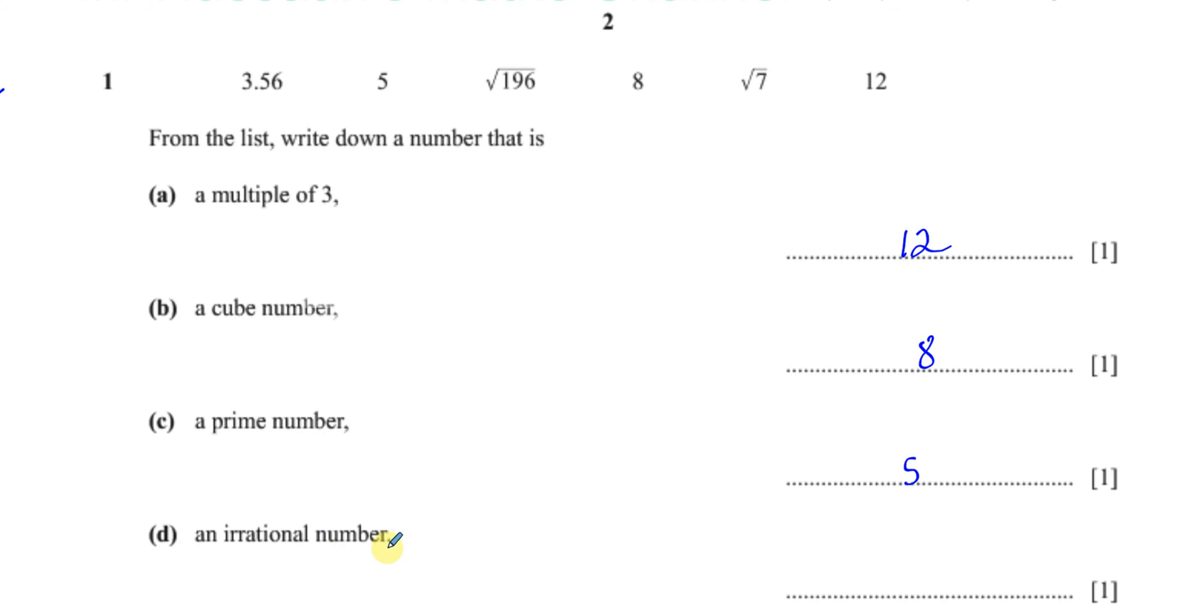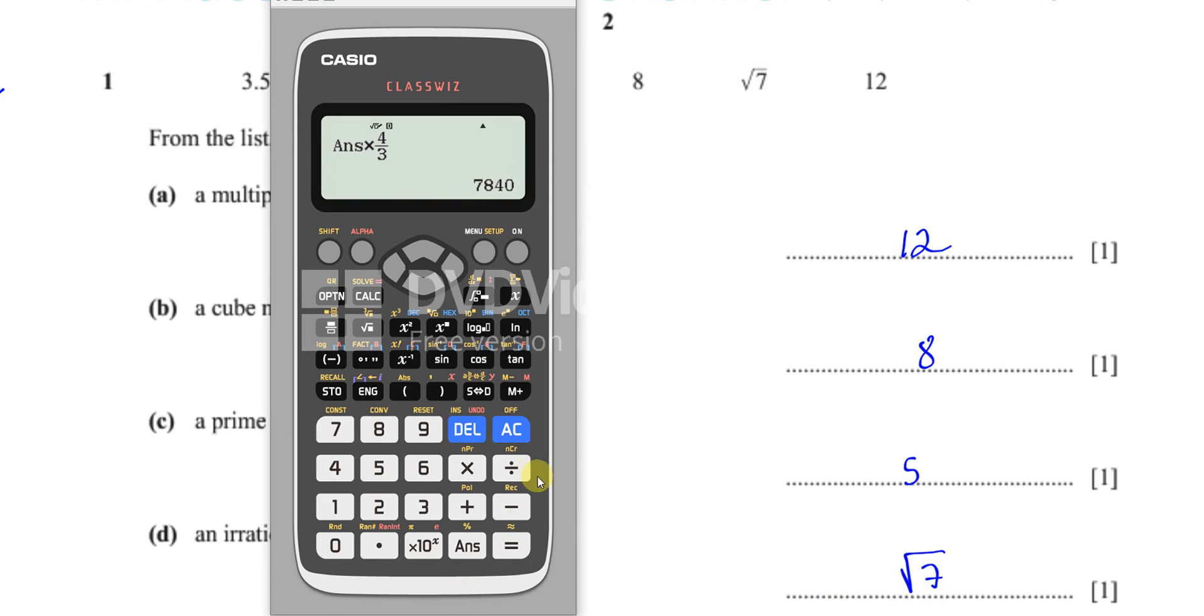And an irrational number is a number, okay, it could be either pi, which we don't have a pi there, or it could be the square root of a number that's not a perfect square. So, we can see that that's straightaway root seven. Okay, if you wanted to check about root 196, you could. You can say the square root of 196. And if it doesn't give you a whole number, then it is irrational. If it does give you a whole number, or a number which basically stops. It doesn't have to be a whole number, but a number which is rational.